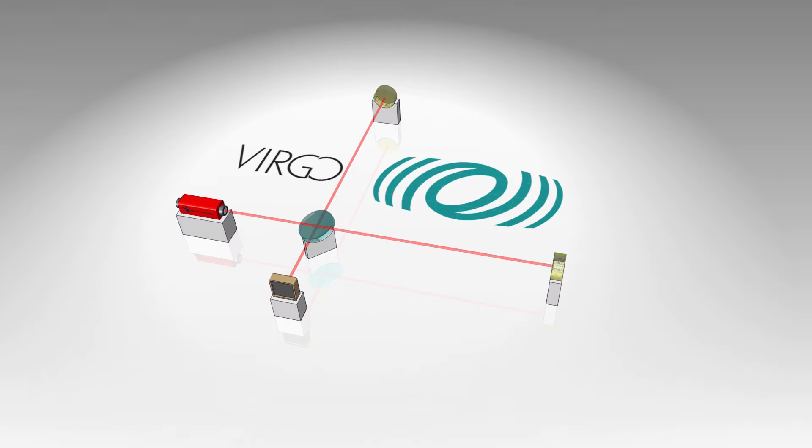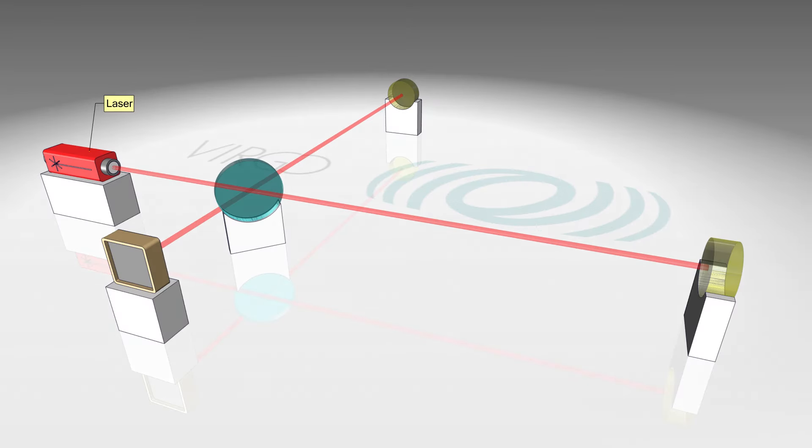In an interferometer, a laser beam is split into two beams. Mirrors reflect the beams so they meet again at the starting point.